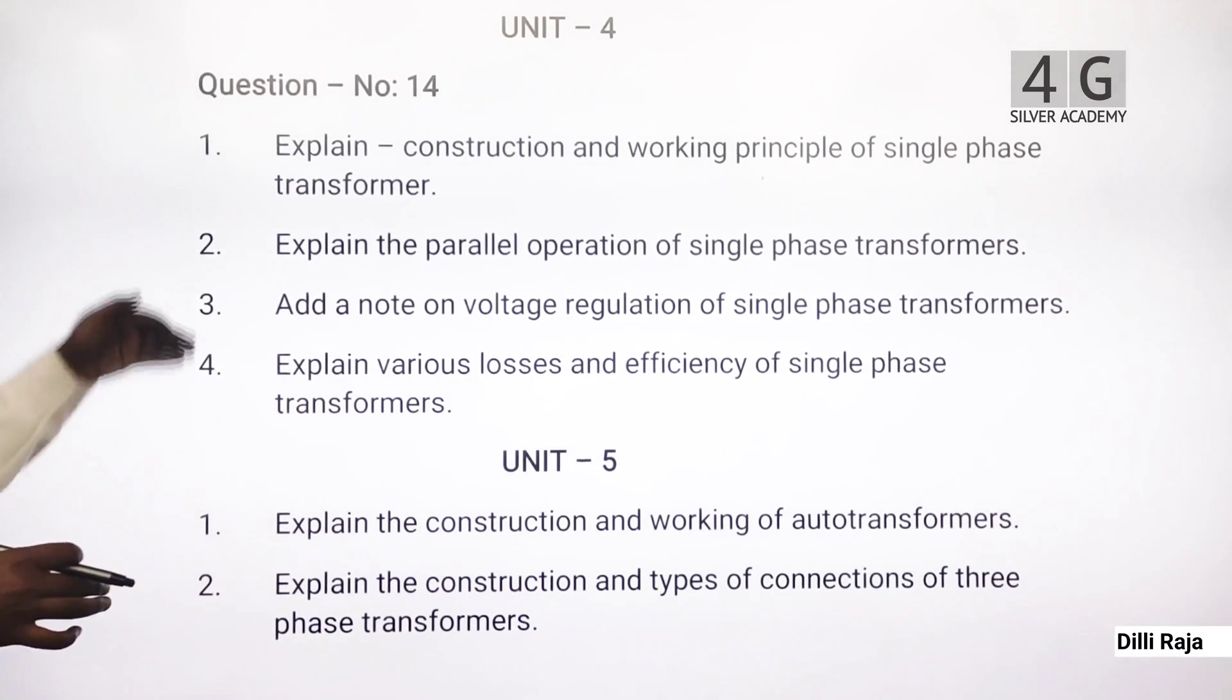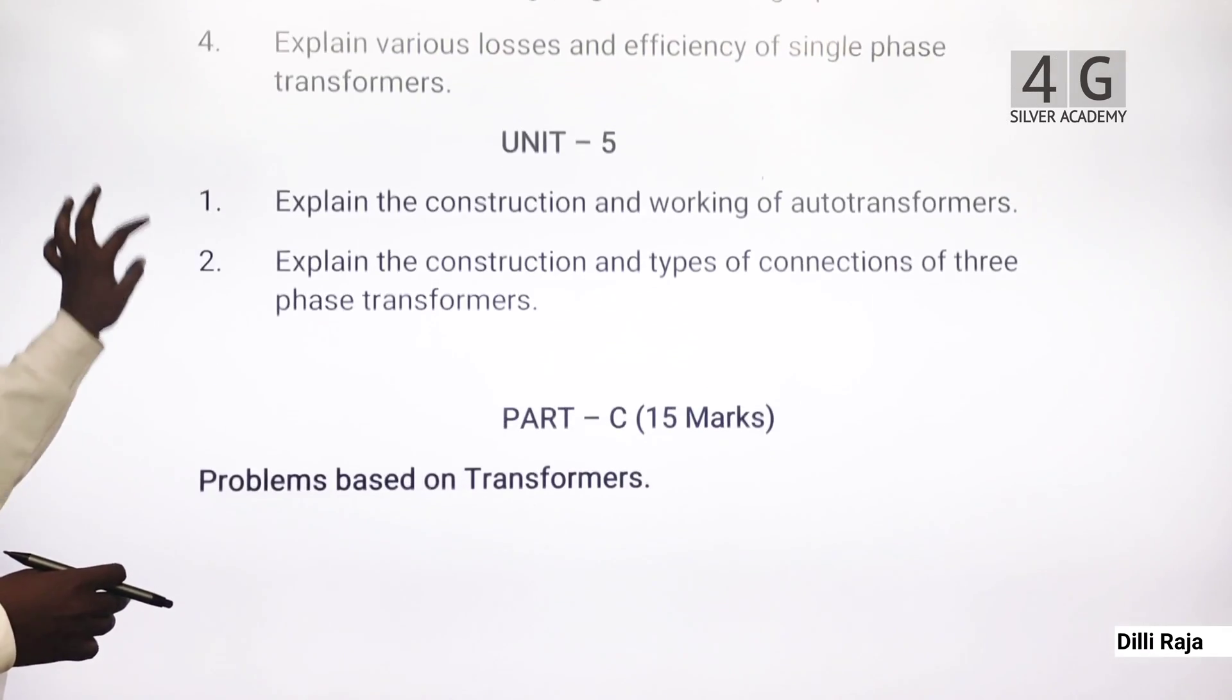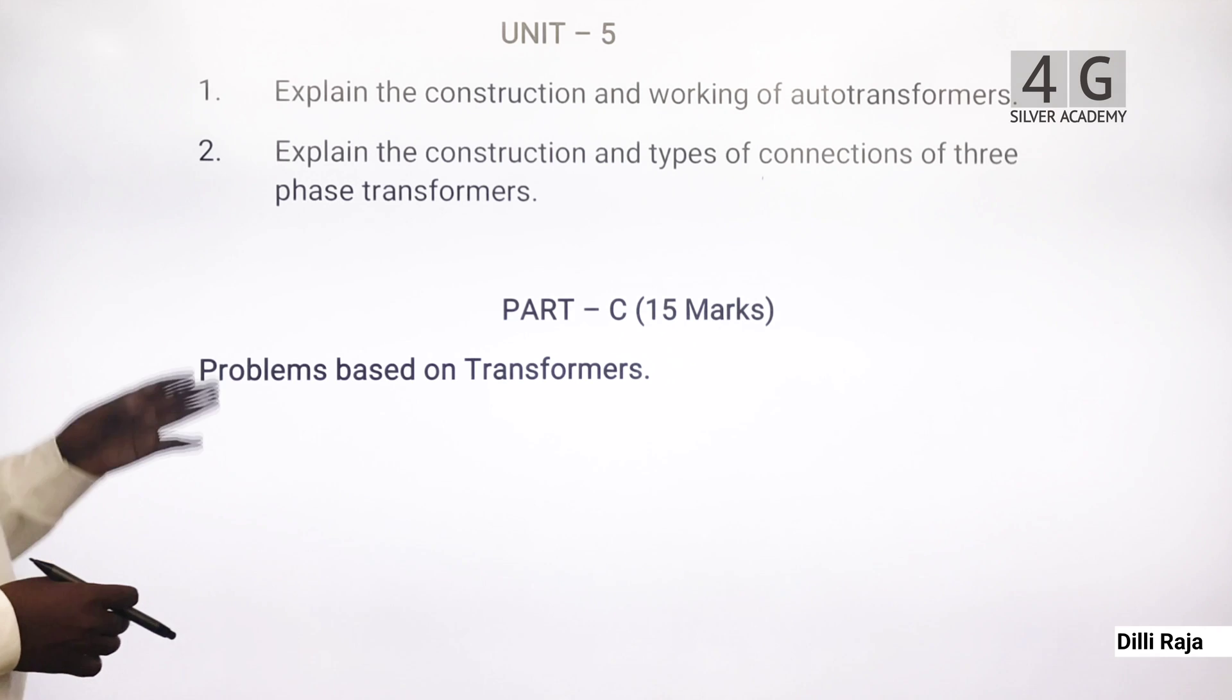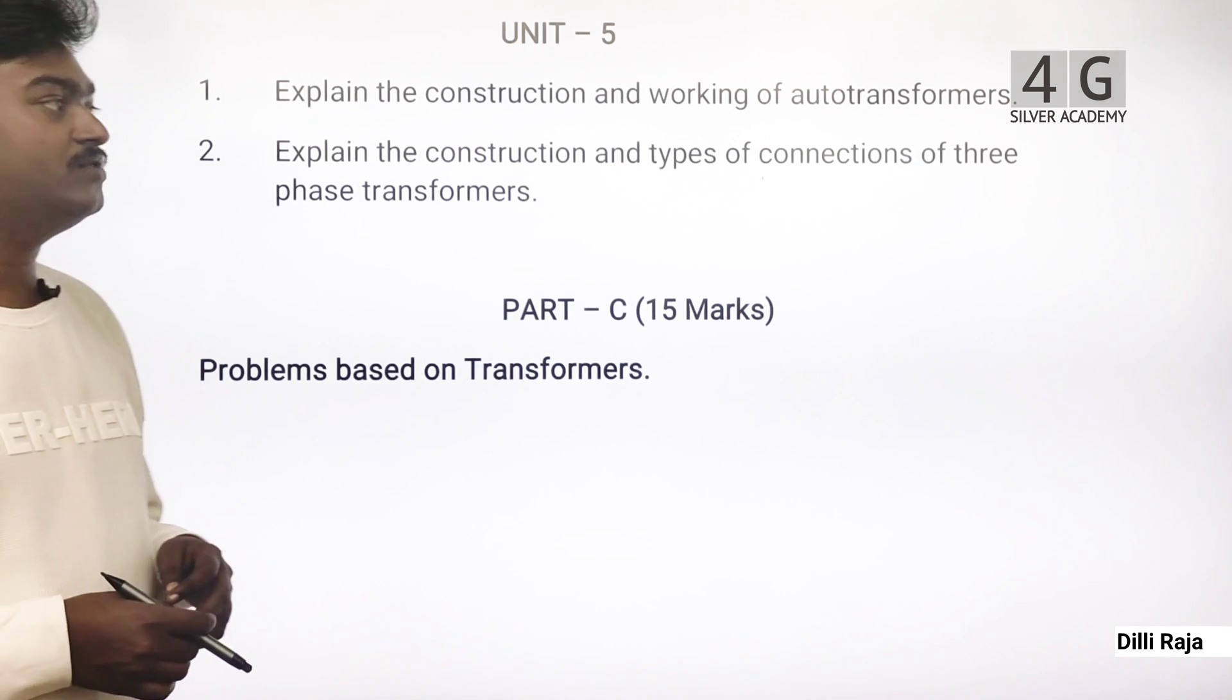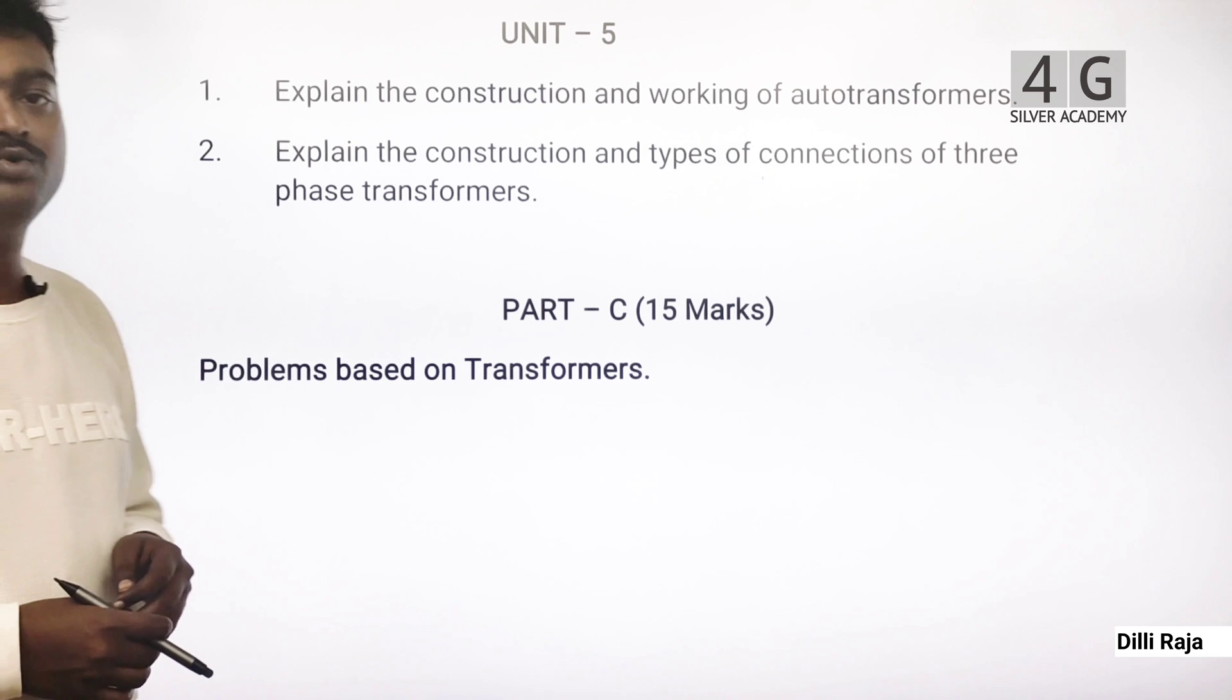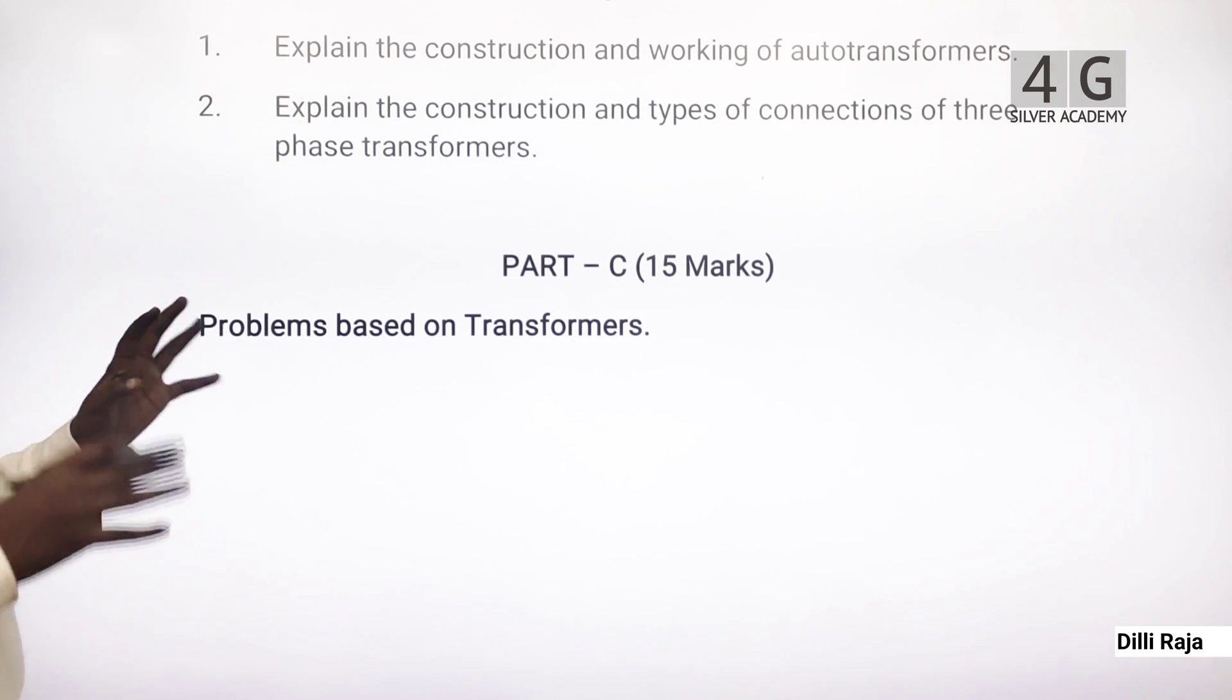These are the four questions for Unit 4. Next, Unit 5: Explain the construction and working of autotransformers. Explain the construction and types of connections of three-phase transformers. These are the two questions for Unit 5. Part C has 15 mark questions with problems.